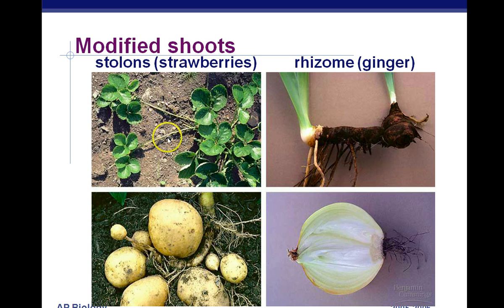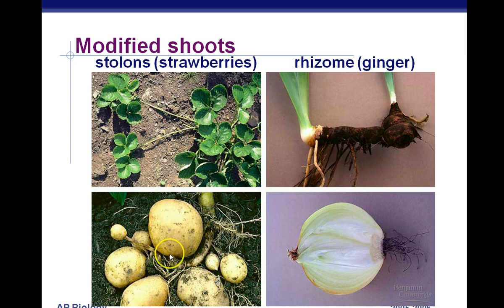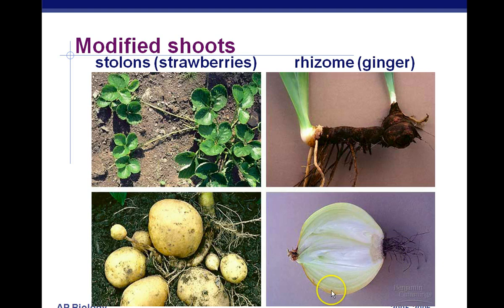Here we have some modified shoots. Stolons on strawberries are sideways kinds of shoots. Potatoes, oddly enough, are a type of shoot — they're not actually a root. And the same thing with onions: these are the roots of an onion, but the onion itself is actually a modified stem.